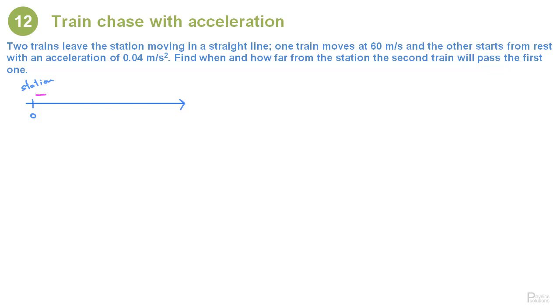The first train is moving with a constant velocity called that v1. The second train starts from rest but is moving with an acceleration that we can call a2. The two trains move to the right and at some point that we usually call d the speeding train will pass the first train and we need to find this point d and the time.